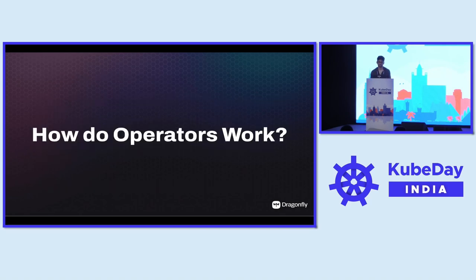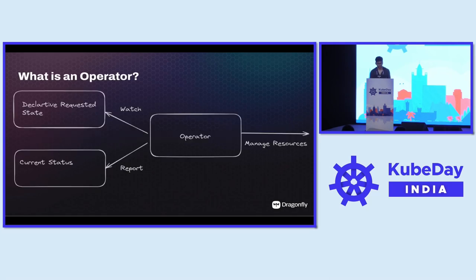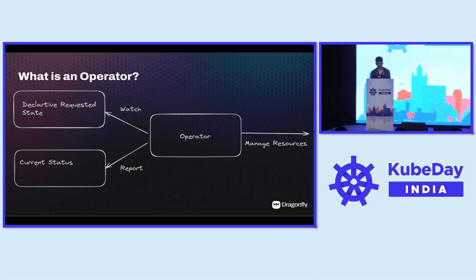Before diving into the codebase, how do operators even work? An operator does three main things. First, it watches for a declarative requested state. When you apply a deployment onto a Kubernetes cluster, it's a requested state — the user is asking for a deployment with a certain configuration, and Kubernetes does that job. The operator works the same way, but for custom resources — not the built-in Kubernetes resources, but new resources. It watches those resources and manages other resources on the other side.